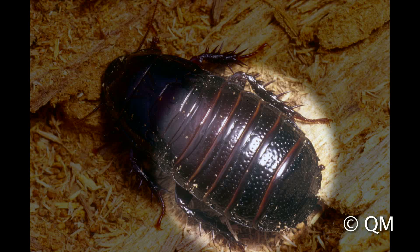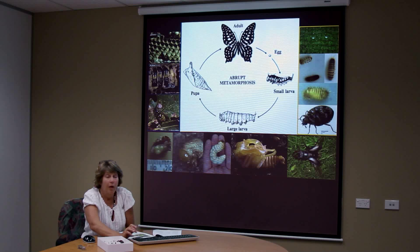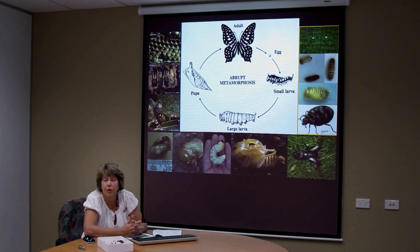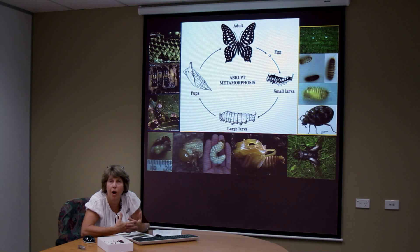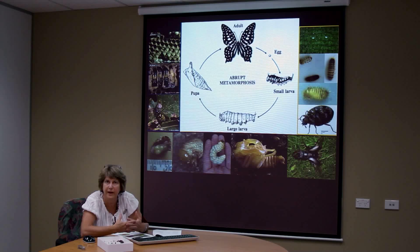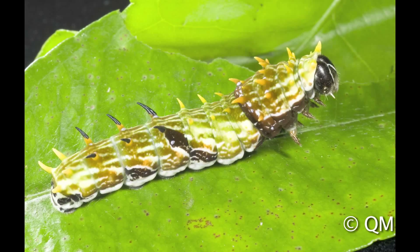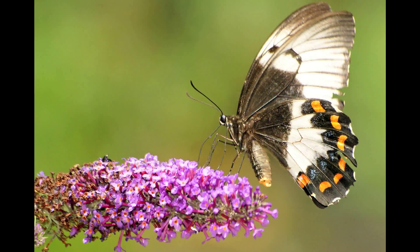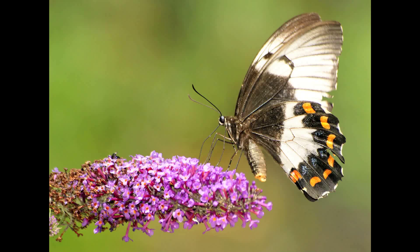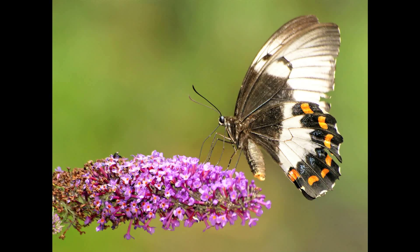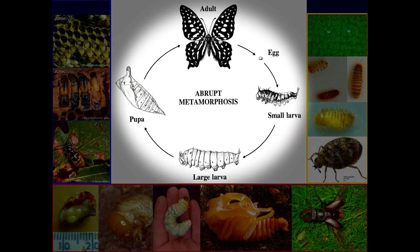The abdomen is usually used mainly for digestion and reproduction. You can often only identify insects when they are adult, as many insects go through a complete change that we sometimes call abrupt metamorphosis or complete metamorphosis.